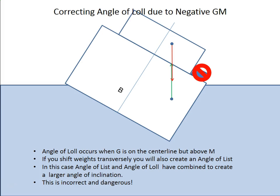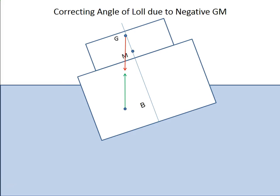So how would you actually correct this? Well, here's the vessel lolling on the other side. It flopped back over. The reason why we have loll is because G is above M, negative GM, negative stability. Well, if we could somehow get G down below M, the vessel would right itself. So we can do this by ballasting. Now, technically, the best thing to do would be to ballast on the low side.